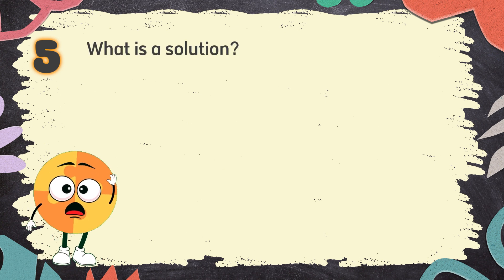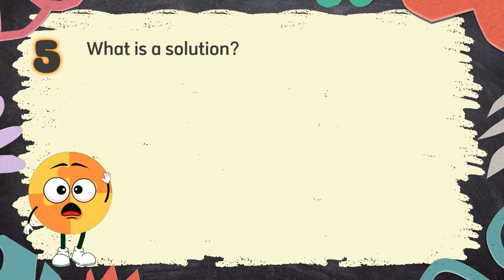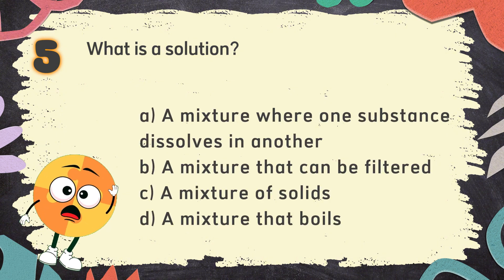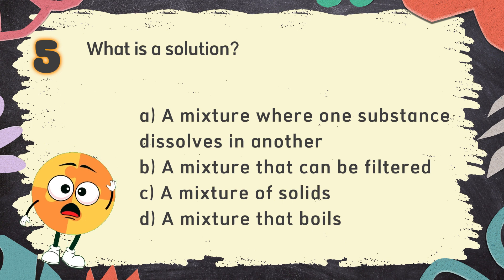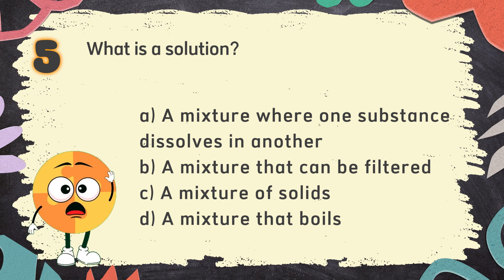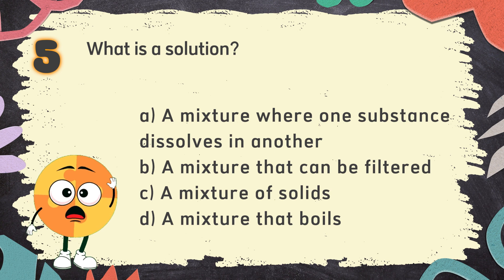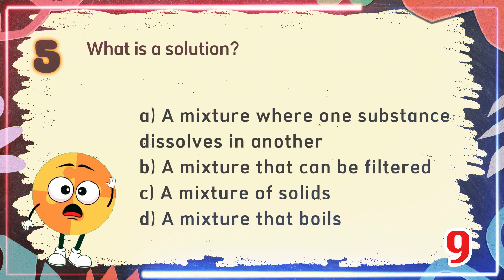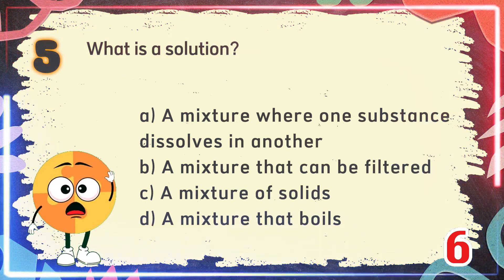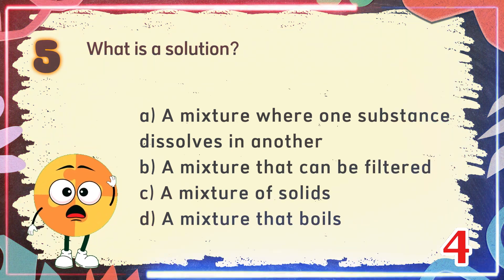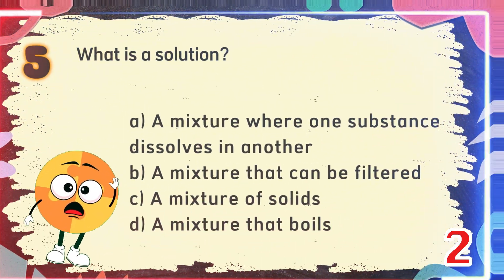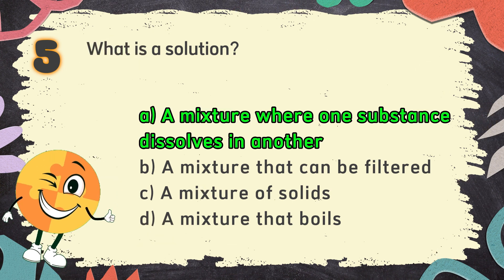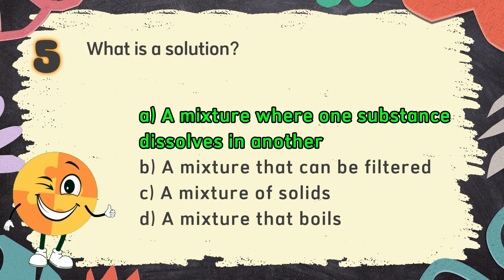Number 5. What is a solution? The choices are: A. A mixture where one substance dissolves in another. B. A mixture that can be filtered. C. A mixture of solids. D. A mixture that boils. The correct answer is A: A mixture where one substance dissolves in another.